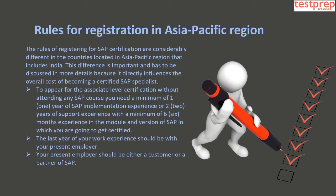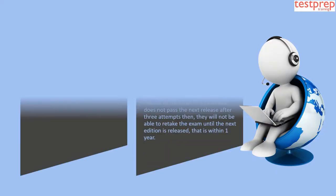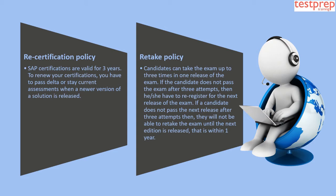Rules for Registration in the Asia Pacific Region: The rules for registering for SAP certification are considerably different in countries in the Asia Pacific region, including India. To appear for the associate level certification without attending any SAP course, you need a minimum of one year of SAP implementation experience, or two years of support experience with a minimum of six months in the module and version being certified. The last year of your work experience should be with your present employer, who should be either a customer or a partner of SAP.